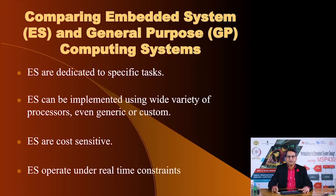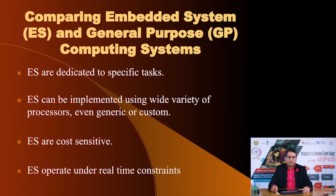The fourth difference is that embedded systems are supposed to work under real-time constraints. Whenever there is an input or environmental change, the embedded system must react and provide output in a timely fashion. A delay in producing output may lead to fatality or loss of life — for example, if the embedded computer flying an aircraft fails to respond to a climb command, it may cause a crash.